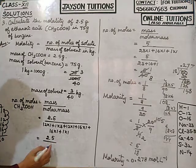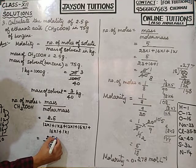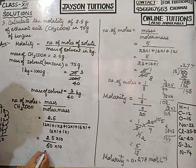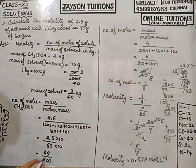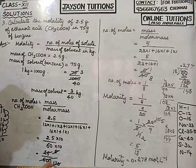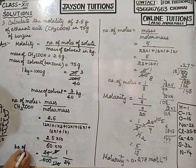2.5 ÷ 60: multiply by 10 to get 25/600, cancel by 5 to get 5/120, then by 5 again to get 1/24. So number of moles of ethanoic acid = 1/24.